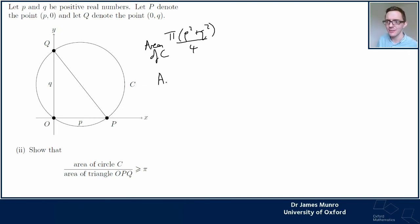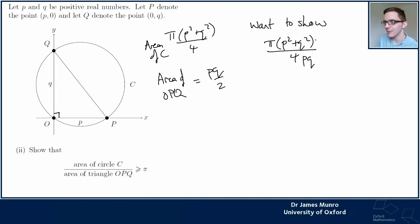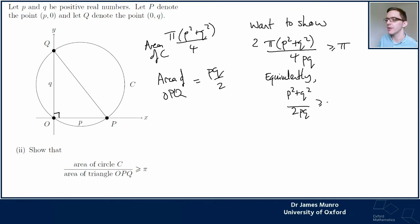The area of triangle OPQ is p·q/2 - it's a right-angle triangle. So I want to show: [π(p² + q²)/4] / [pq/2] ≥ π. Equivalently, dividing both sides by π: (p² + q²)/(2pq) ≥ 1. I'm being careful: p and q are positive, so I can multiply through. This means I want to show p² + q² ≥ 2pq.